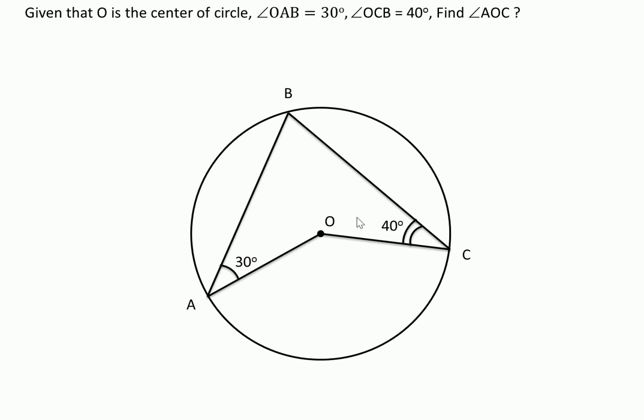In this figure, given that O is the center of circle and two angles are given: angle OAB is 30 degrees and angle OCB is 40 degrees, and we need to find out the angle AOC. Now to solve this problem,